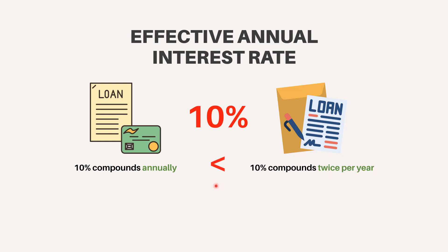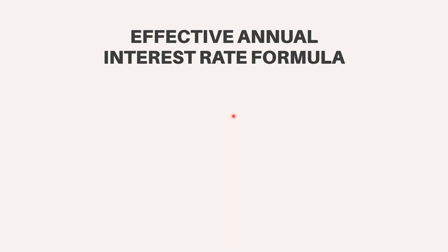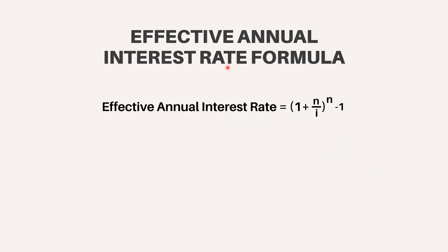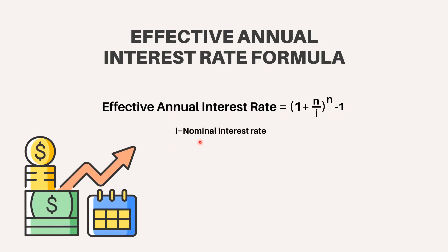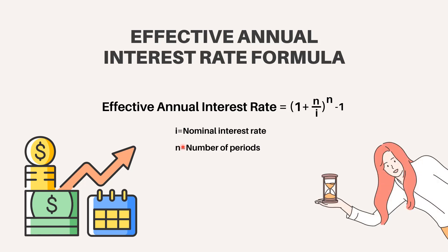Effective annual interest rate formula. The following formula is used to calculate the effective annual interest rate: Effective annual interest rate equals (1 + i/n) to the power n, minus 1. Where i equals the nominal interest rate, and n equals the number of periods.